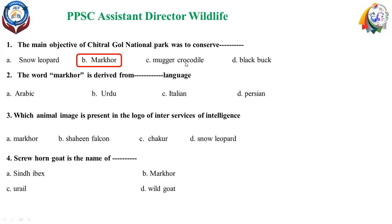There is a Nara Desert Wildlife Sanctuary where conservation of Mugger Crocodile takes place. And Black Buck — a black deer — was the purpose of Pakistan's first national park, Lal Suhanra National Park, established in 1972, which was created for the conservation of Black Buck.